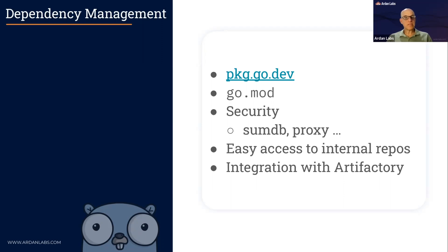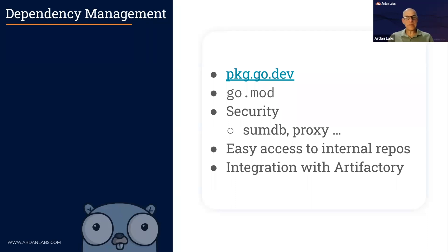The dependency management in Go has security built in — there's a sum database with cryptographic signatures for packages you bring in, plus proxies and other mechanisms. Supply chain attacks are not impossible but they're harder in the Go ecosystem. You can also integrate with other tools like Artifactory if you want to host packages yourself, but most companies can just place code in Git and be done serving an internal repository.